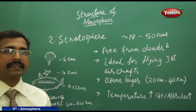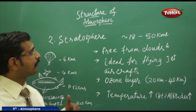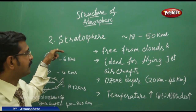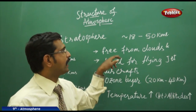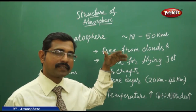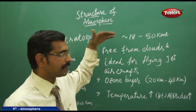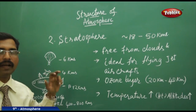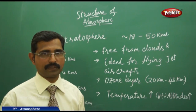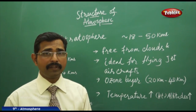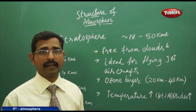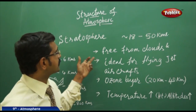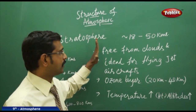The second important homospheric atmospheric layer is the stratosphere. At the equator the troposphere ends at 18 km and at the poles at 8 km; from there the stratosphere extends up to 50 km. The stratosphere is free from clouds, meaning there is no weather-associated phenomenon such as cyclones, rainfall, precipitation, or condensation taking place here.